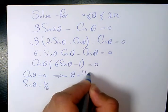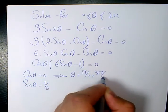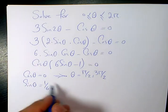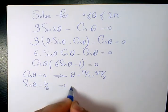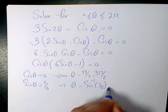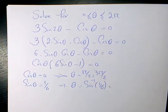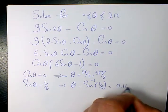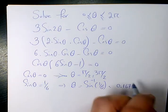So cosine theta is 0, theta can be pi over 2 and 3 pi over 2. Sine theta is 1 over 6, so I need to have the sine inverse. That's going to be sine inverse of 1 over 6, that will be 0.1674 radians.